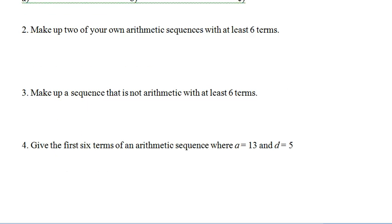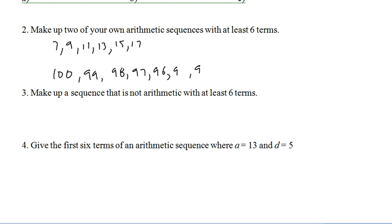Number 2 says make up your own arithmetic sequences with at least 6 terms. So, let's say we start with 7 and add 2 every time. So, we go 7, 9, 11, 13, 15, 17. And let's do one with a negative difference. So, maybe go 100, 99, 98, 97, 96, 95, 94. That's got at least 6.